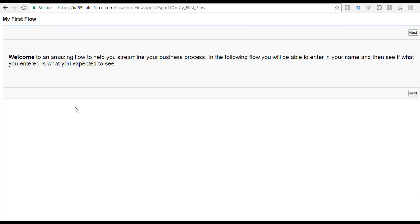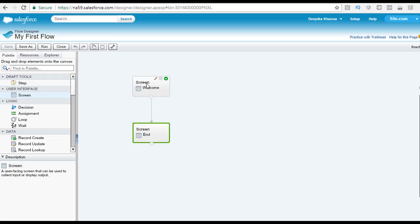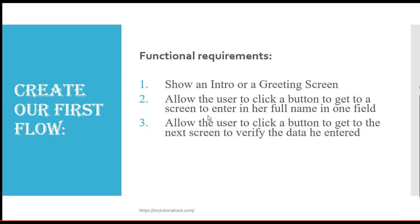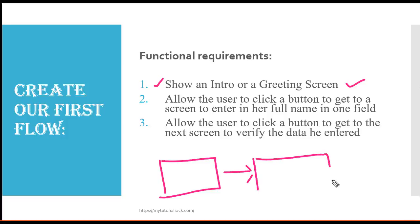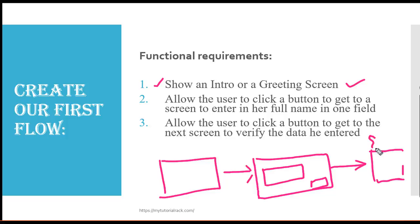So what we have done here is added two screens to this flow: the welcome screen and the end screen. Looking back at the requirements — show an intro on a greeting screen, which is done. Allow the user to click a button to get to a screen to enter their full name — the welcome and end screens are done. Now we need to create the middle screen where the user can type in their full name, and a button that takes them to the end screen.